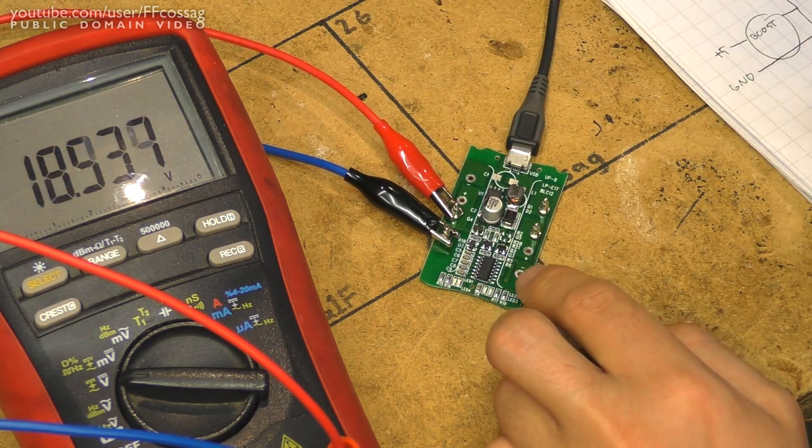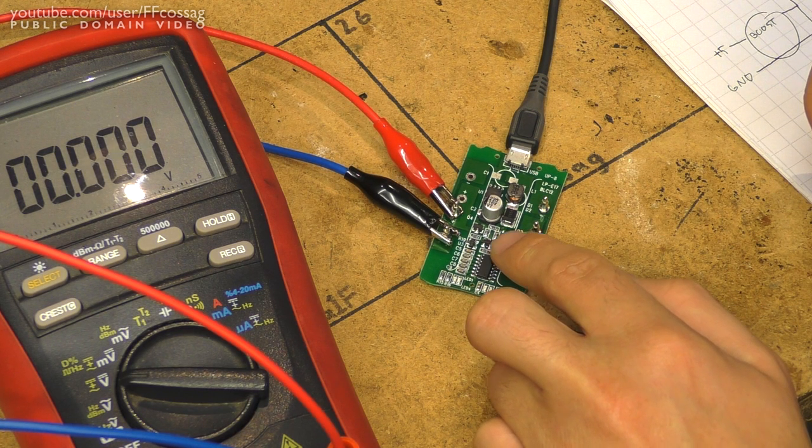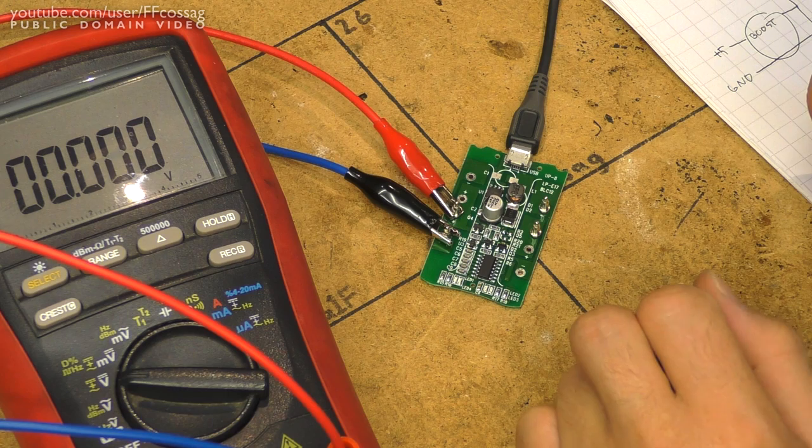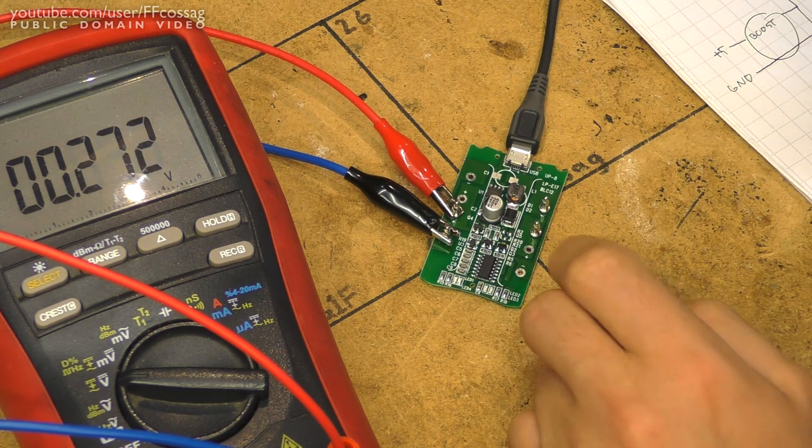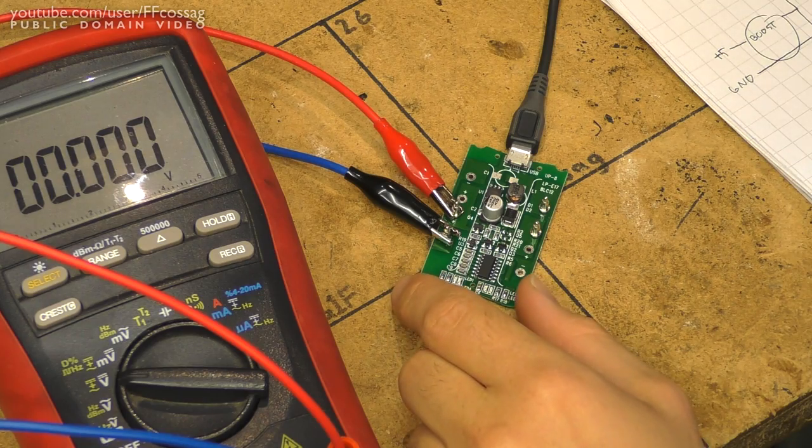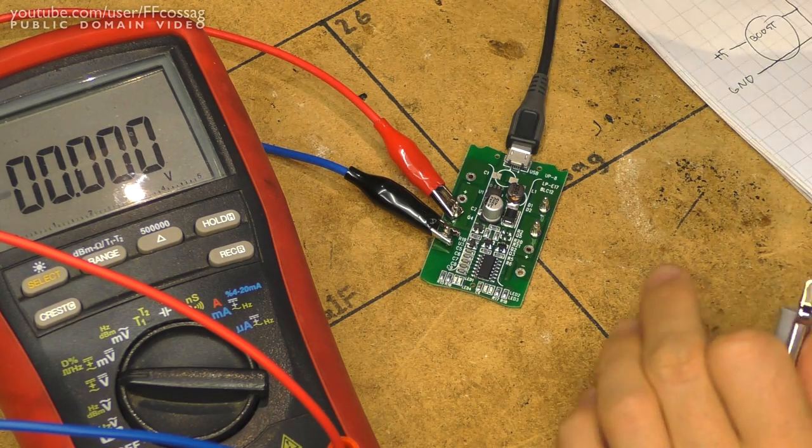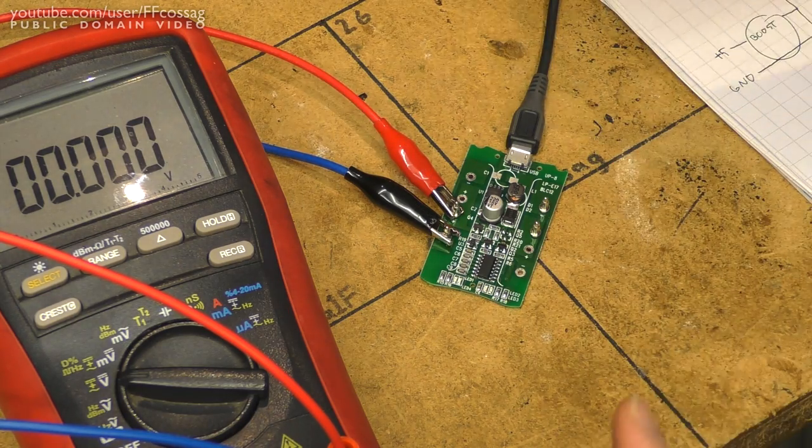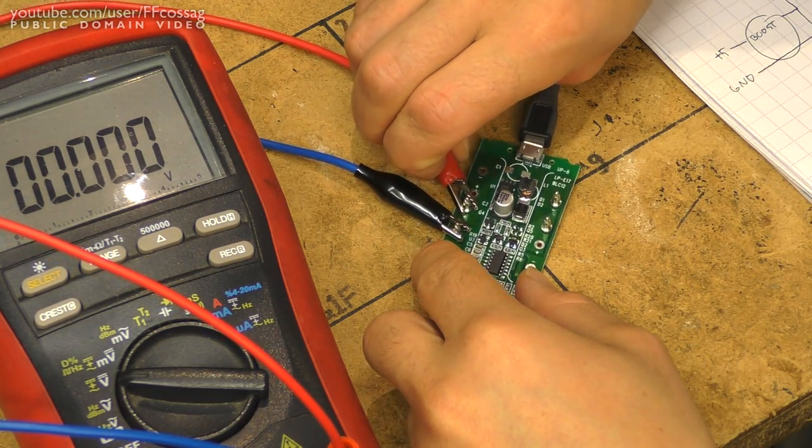So I did a bit more digging around, and these two transistors are just driving the big ones, which are switching the current into the battery. And you know what, yeah, that has to be what killed the transistor.